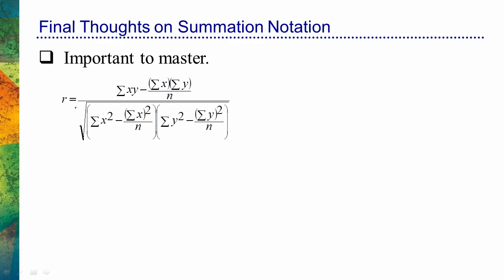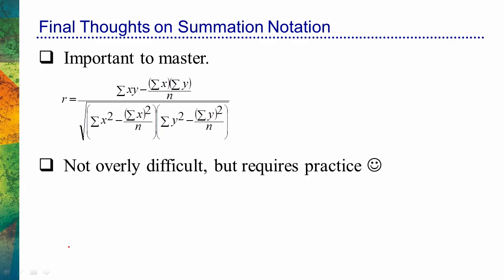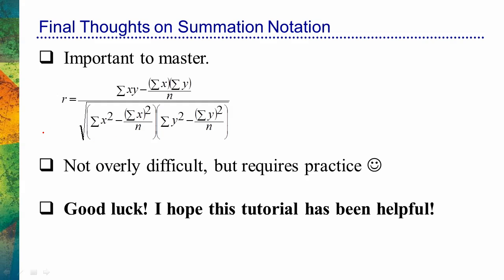Some final thoughts on summation notation. First of all, it's very important to master — the language of statistics is written in summation notation. It's sometimes easy to confuse what we're being asked to compute. For example, there's an important distinction between the sum of x squared and the sum of x, that quantity squared; or the sum of x times y versus the sum of x times the sum of y. It's not overly difficult, but as you can see from what we just discussed, it does require practice. Good luck — I really hope this tutorial has been helpful. Summation notation is fun to play with, and it's very important to master so that you can do well in the rest of your statistics course.